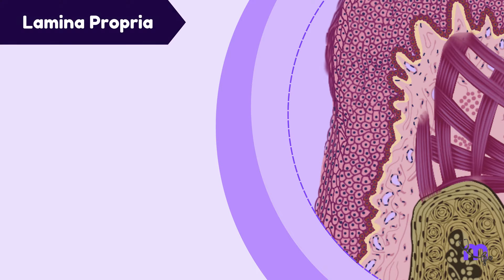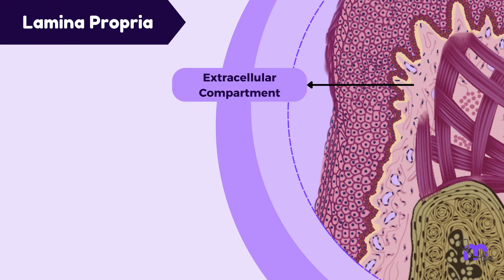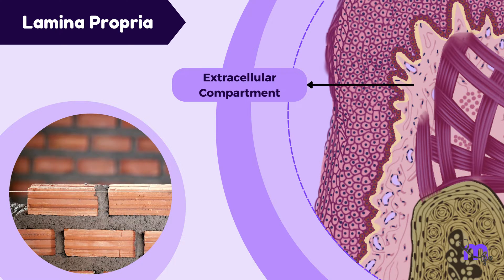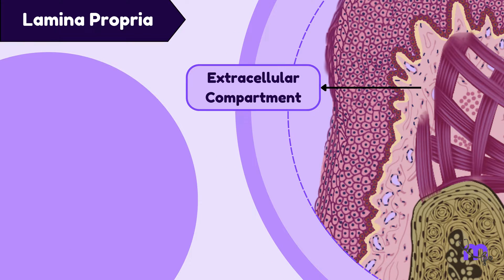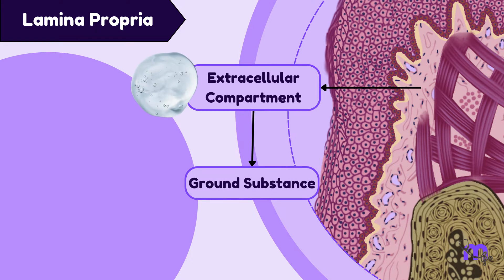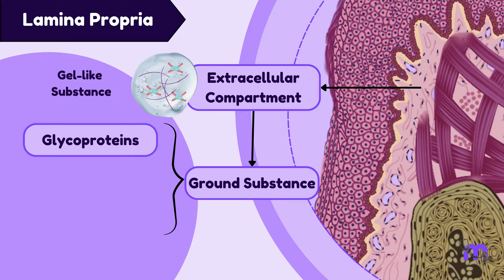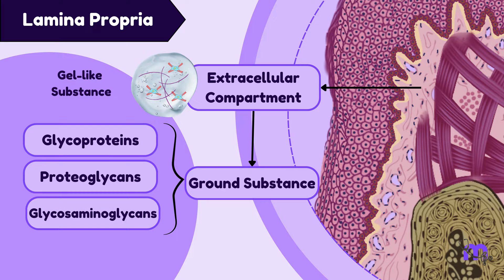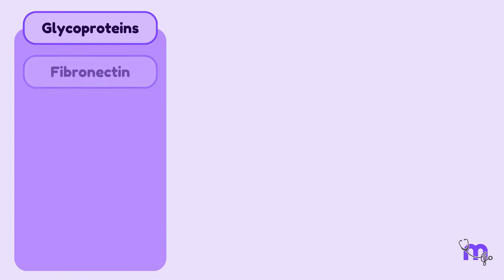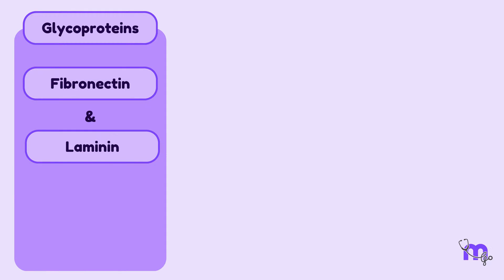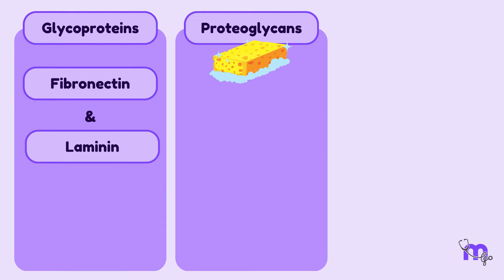Within the lamina propria, there's a crucial space called the extracellular compartment — think of it as the mortar between bricks, essential for the structure. Within this space, we find the ground substance, like a gel-like filler filling the gaps between cells and fibres. These are composed of specific molecules like glycoproteins, proteoglycans, and glycosaminoglycans. Glycoproteins include fibronectin and laminin. Proteoglycans are like sponges filled with water; they help maintain the tissue's hydration and shape.